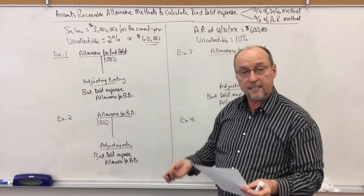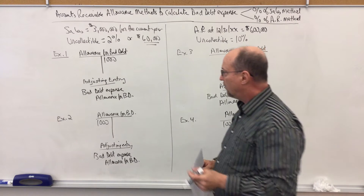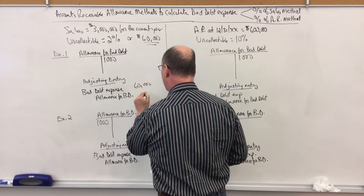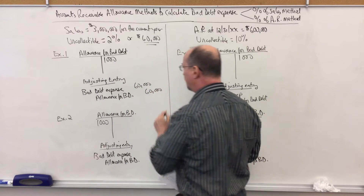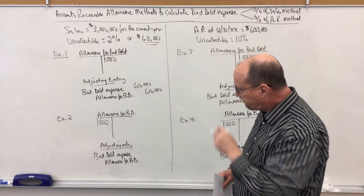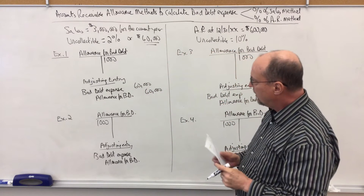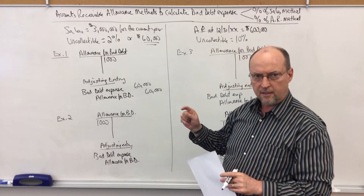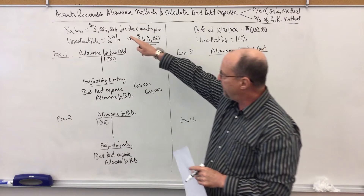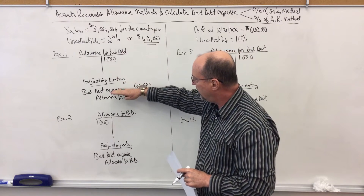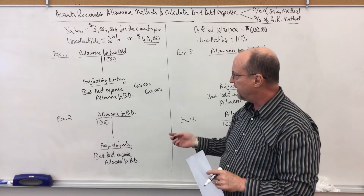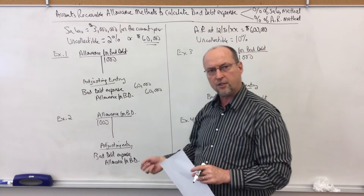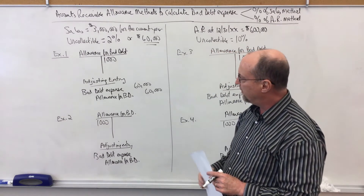That's the adjusting journal entry right there. I'm simply going to debit bad debt expense and credit the allowance for bad debt. The sales method focuses on the income statement — we're taking revenue and trying to calculate how much bad debt expense should be on the income statement. We're not really focusing on the balance sheet with the percentage of sales method.